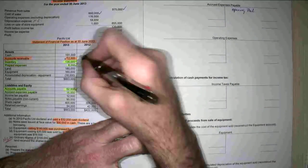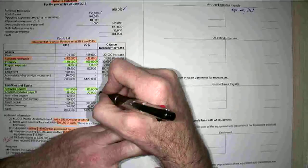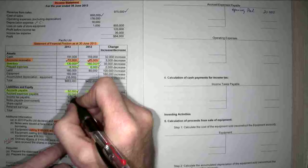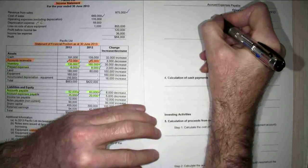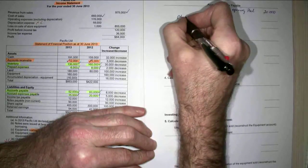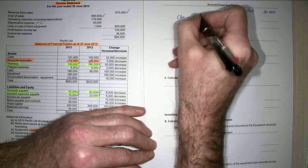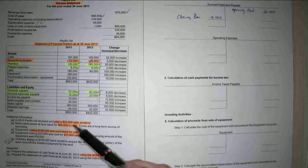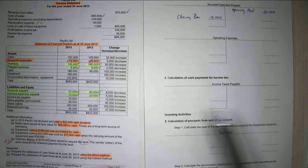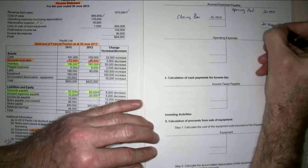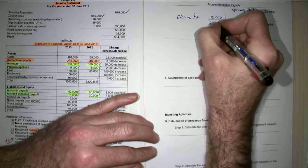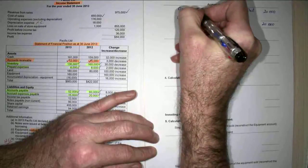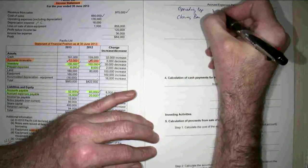Opening balance is $20,000, closing balance is $15,000. It didn't tell me any more about operating expenses or accrued expenses, so I've just got to assume that what went to my operating expenses is $5,000.